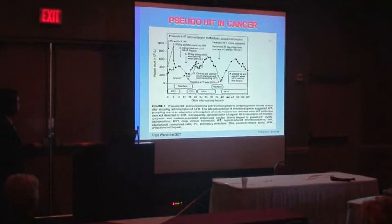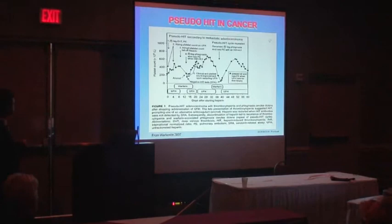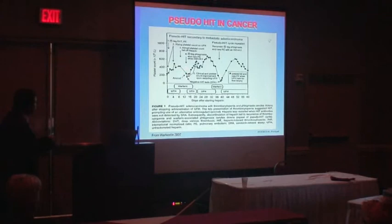Here is another case that was not very conclusive, and this illustrates how complicated the diagnosis of HIT can be. This is a patient with HIT suspected secondary to metastatic adenocarcinoma. HIT was suspected because there was a fall in platelet count, but anticoagulation was already anticipated with warfarin. The test being negative, the patient received heparin again and the platelet count normalized.